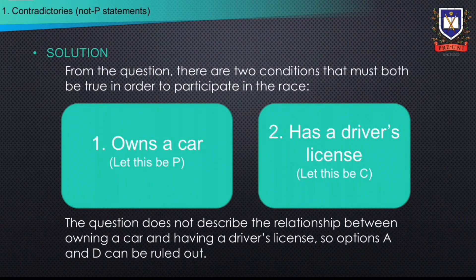Let's look at the solution. From the question, there are two conditions that both must be true to participate in the race. Let P be the statement 'owns a car' and let Q be the statement 'has a driver's license.' It can be noted here that the question does not describe a relationship between P and Q, only their relation to participating in a race. Options A and D are therefore incorrect.